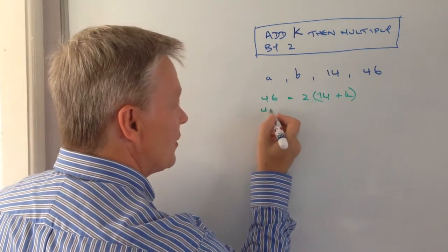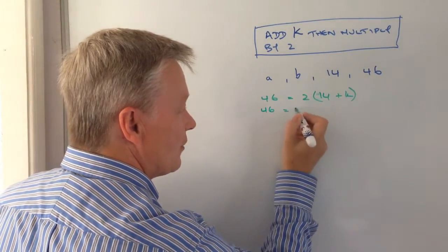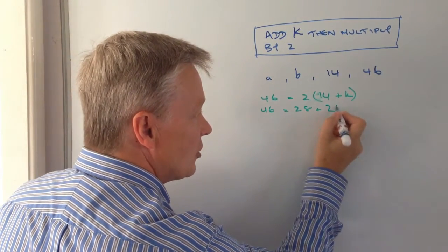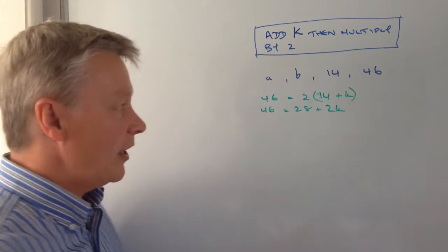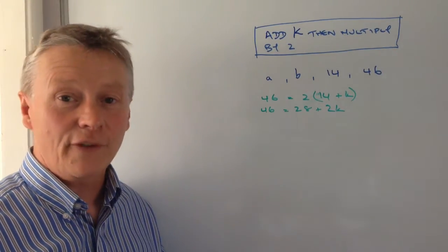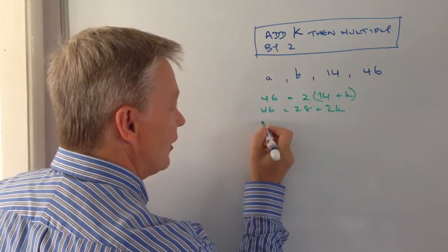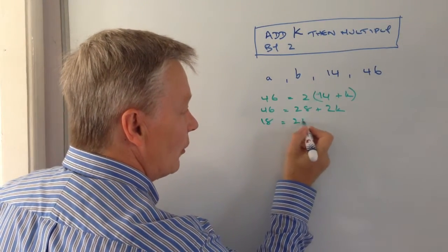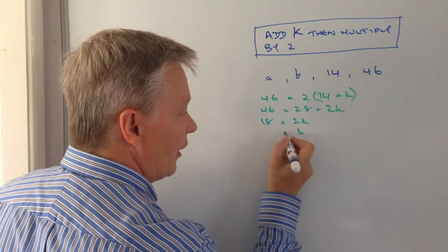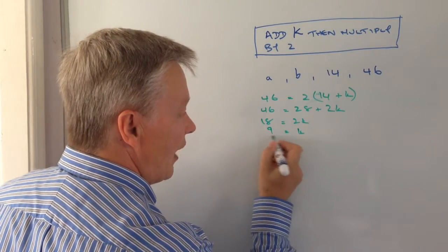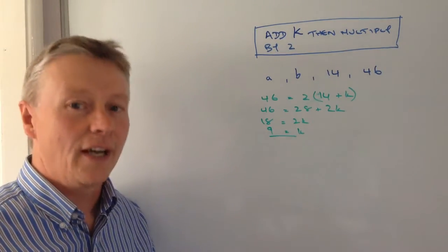So I've got 46 equals 2 times 14 is 28 plus 2 times k is 2k. So if I then take 28 from both sides, and this is just really linear equations here, so hopefully you're fairly familiar with what I'm doing here. I'll just divide through by 2, so therefore k equals 9.